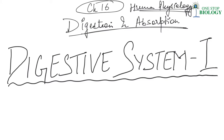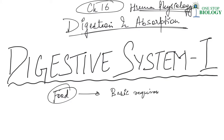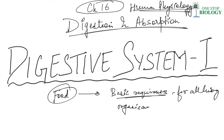When it comes to digestion and absorption, the first thing that comes to mind is food. Food is considered as one of the basic requirements for all living organisms. We have various components in our food which are required for growth and repair. These components may be carbohydrates, proteins, or fats.